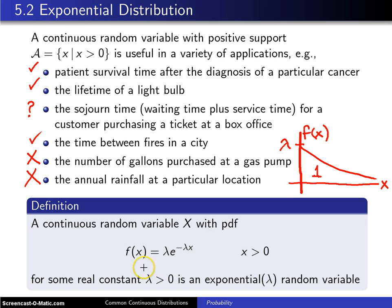So again, the exponential distribution models some positive random variables well and others not so well.